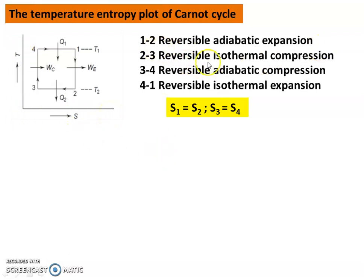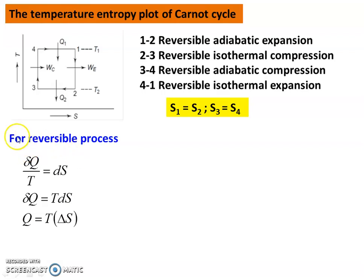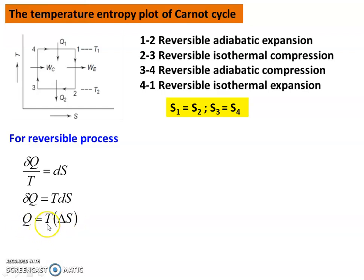In the T-S diagram: Reversible Adiabatic processes are at constant entropy, and Reversible Isothermal processes are at constant temperature — that is why we get a rectangle shape. For a reversible process, the Clausius theorem states that dQ/T equals dS. Rearranging, dQ equals T·dS, and integrating gives Q equals T·ΔS. So heat transfer equals temperature times change in entropy.